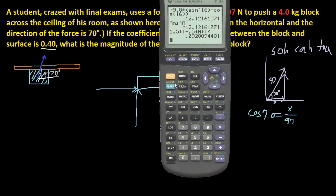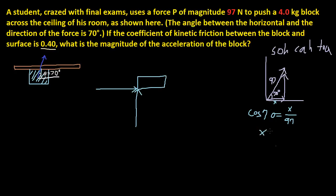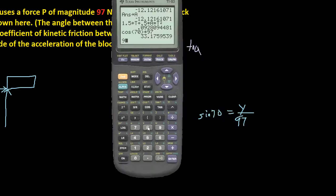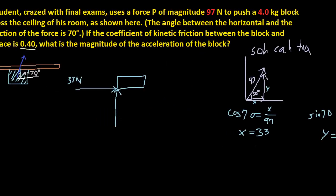So you just multiply 97 by cosine 70. Make sure your calculator is in degree mode. Cosine of 70 times 97 gives 33. So x is 33 newtons this way. Now, in order to figure out y, it's going to be opposite over hypotenuse, so you use sine. Sine of 70 equals y over 97. So 97 times sine of 70 gives 91. So y equals 91, so this is 91 newtons.